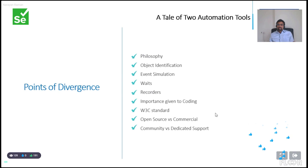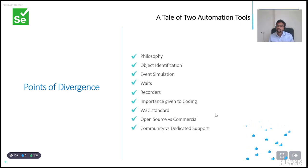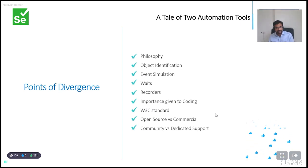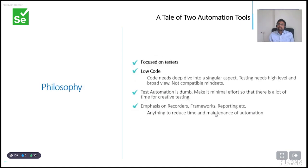The points of divergence between Sahi and Selenium: first is the philosophy itself. After that came object identification, event simulation, automatic waits, recorders, and the importance given to coding. We were very focused on testers from the first day.